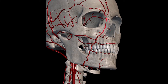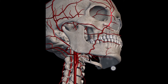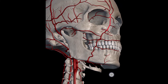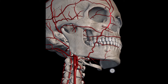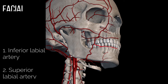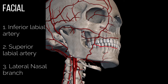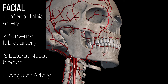The branches of the facial artery can be divided into the facial branches and the cervical branches. The facial branches include: number one, the inferior labial artery; number two, the superior labial artery; number three, the lateral nasal branch; and number four, the angular artery.